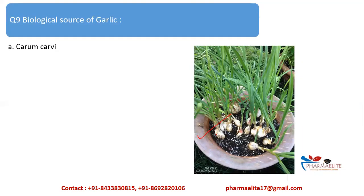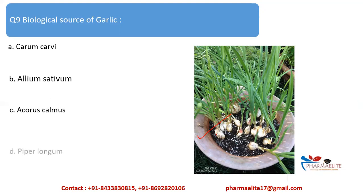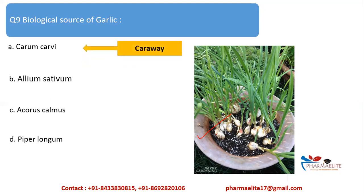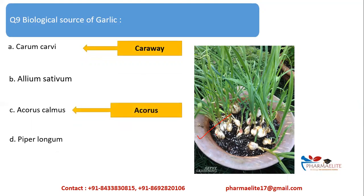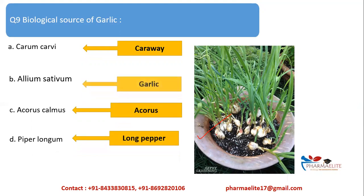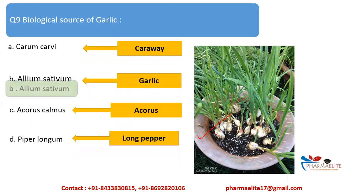Next question: biological source of garlic. Options are Carum carvi (caraway), Allium sativum, Acorus calamus, and Piper longum (long pepper). Acorus calamus gives Acorus, Piper longum gives long pepper, and Allium sativum is the source of garlic. So the correct answer is option B: Allium sativum.